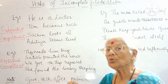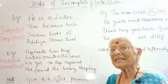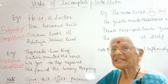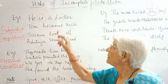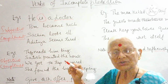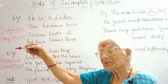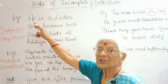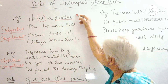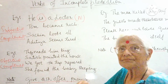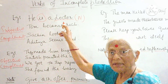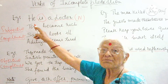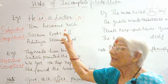We have already done this example, but I wanted to clarify one more point. In 'he is a doctor,' the verb 'is' is an incomplete verb. 'Doctor' is the complement, but you are talking about the person who is a doctor — so here it belongs to the subject 'he.' Therefore, 'doctor' is a subjective complement. Another example: Tom became rich.